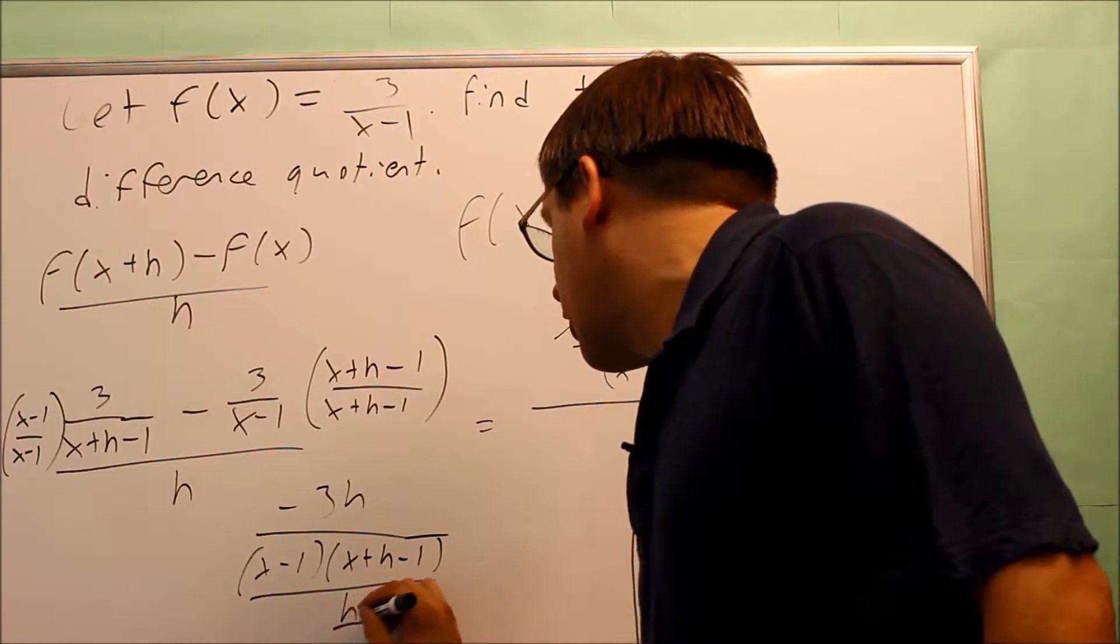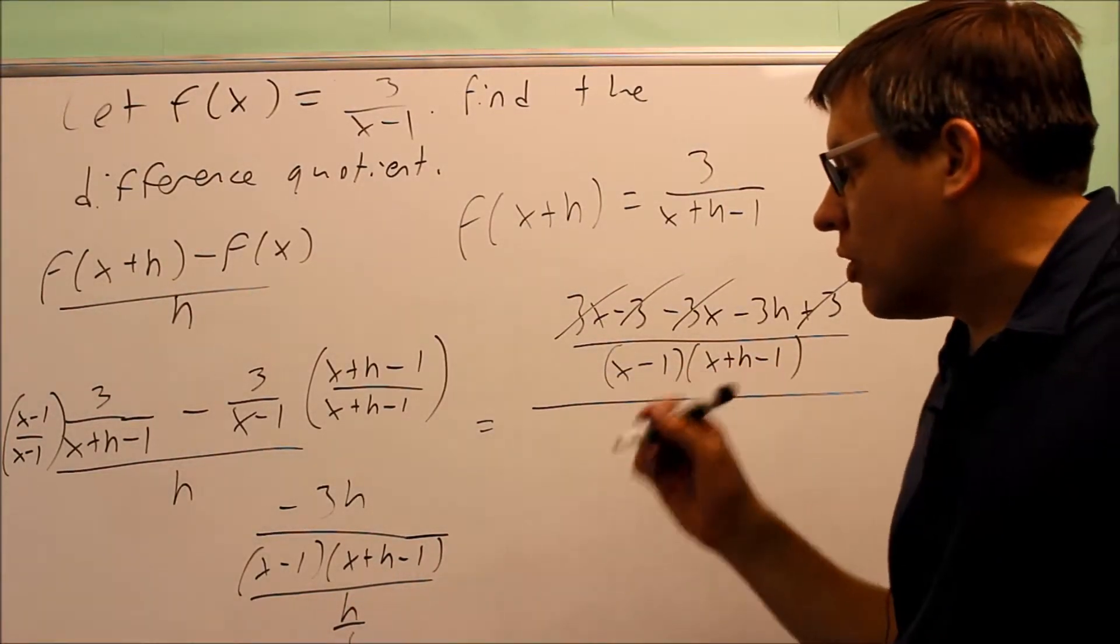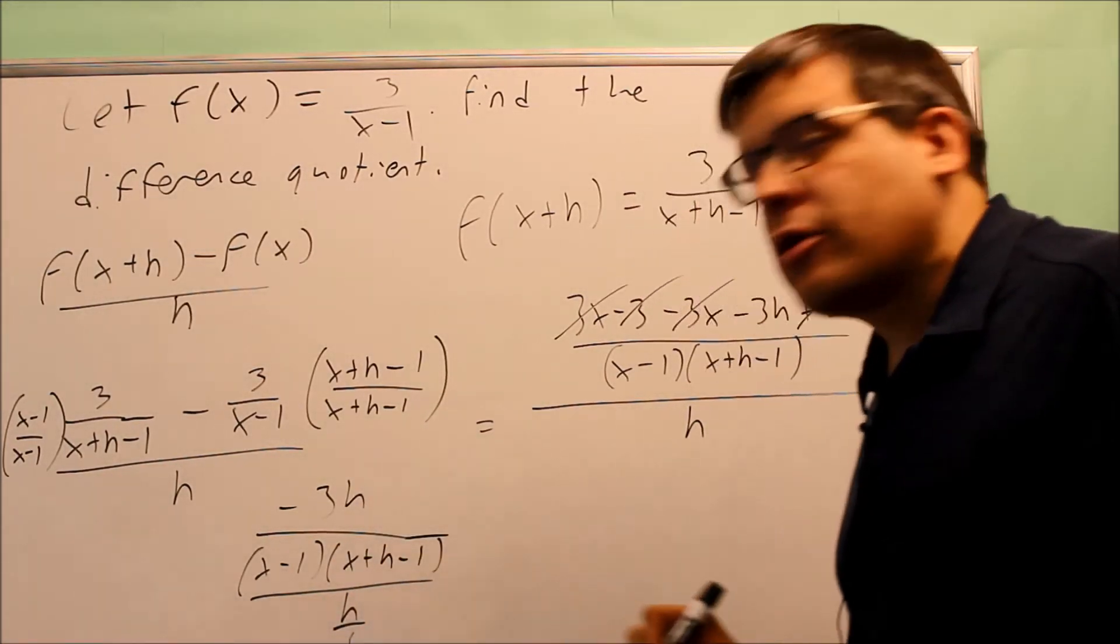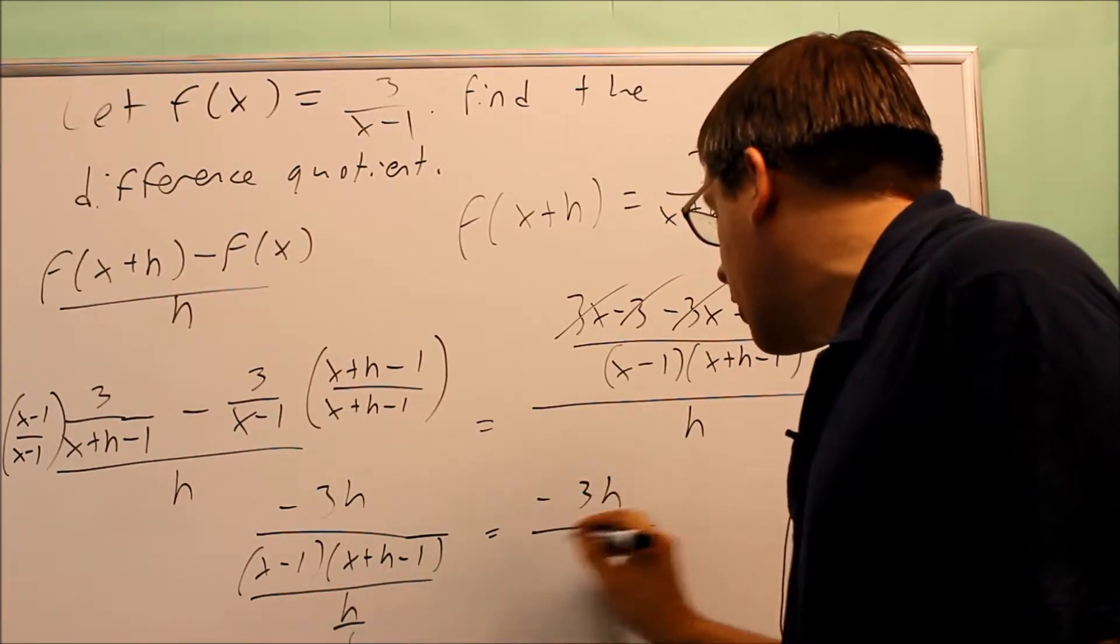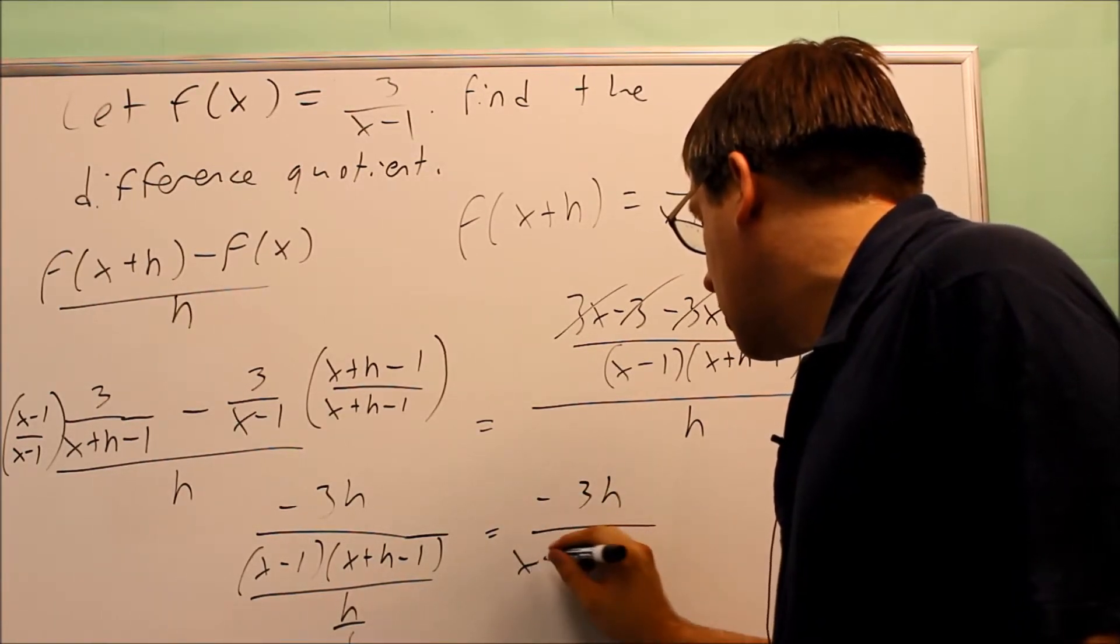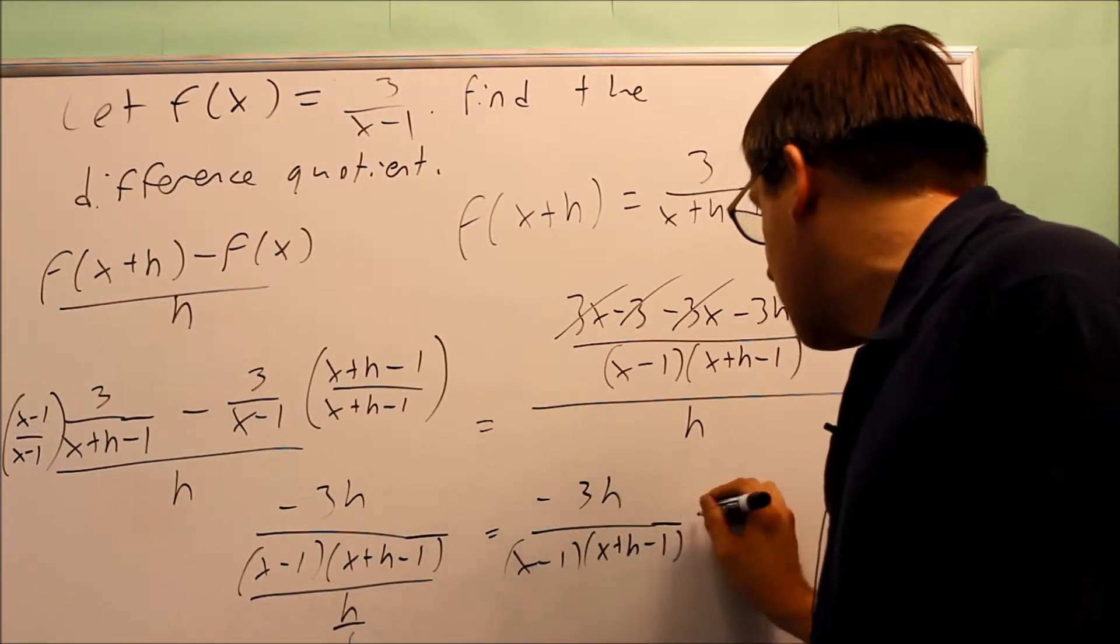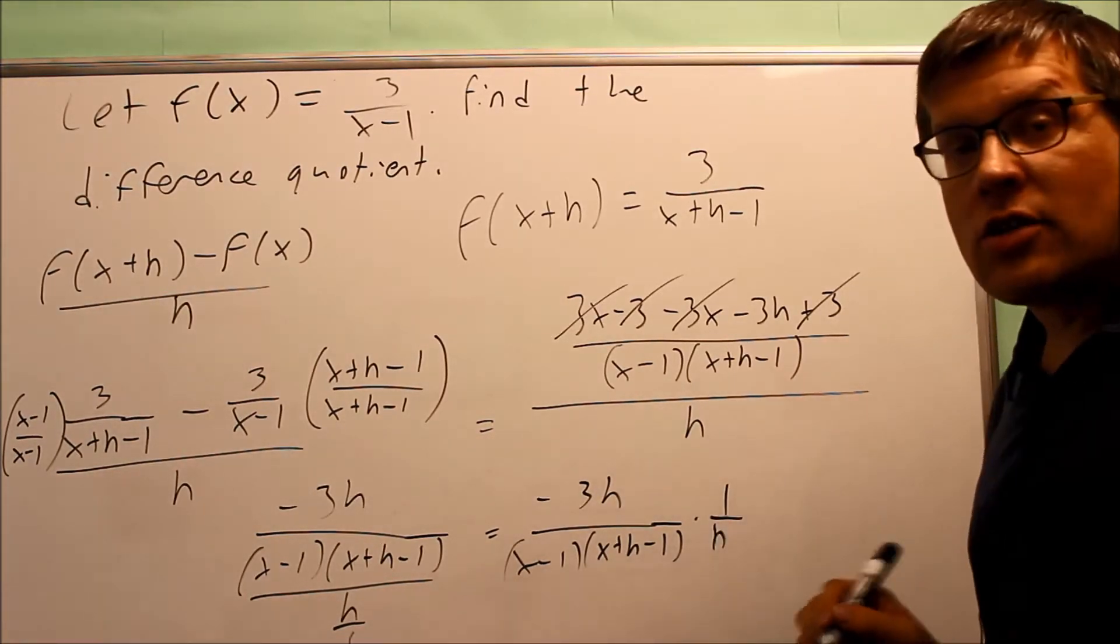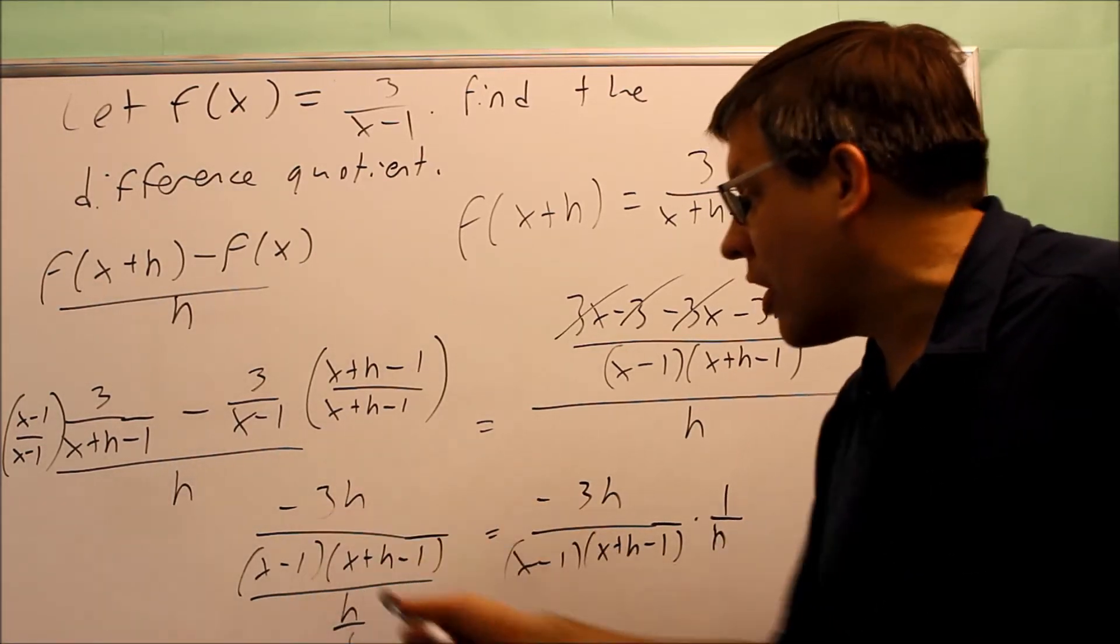Now I have this all over h over 1. So when you take two fractions, the rule of that is you take the top fraction exactly the way it is and you're going to multiply it by the reciprocal of the bottom one. So this is negative 3h over x minus 1 and x plus h minus 1. I'm going to multiply this by the reciprocal, which means that I'm going to multiply that by 1 over h. So again, that's the procedure for dividing two fractions. Take the top fraction, multiply by the reciprocal of the bottom one.